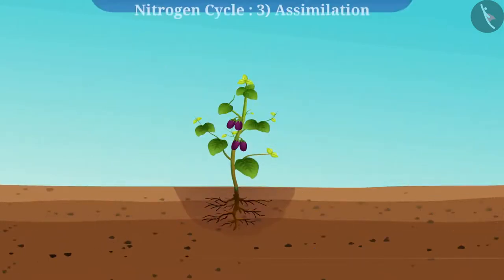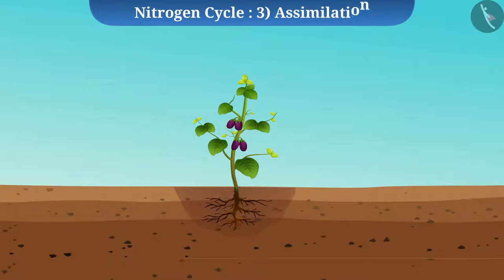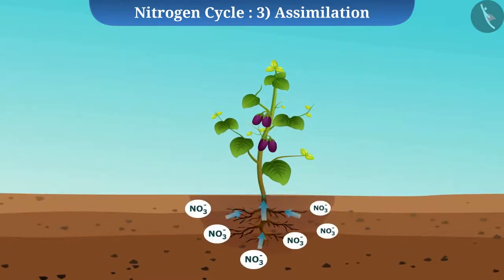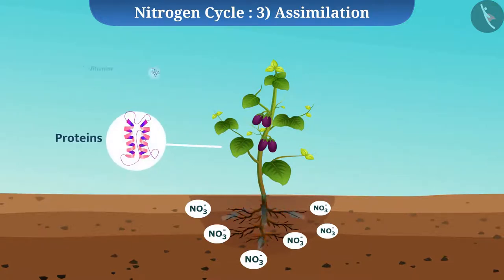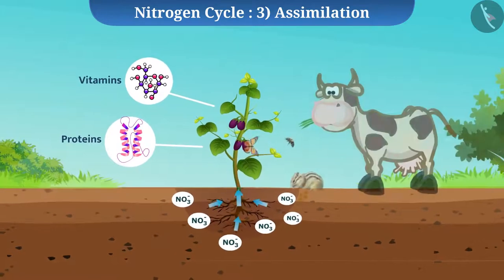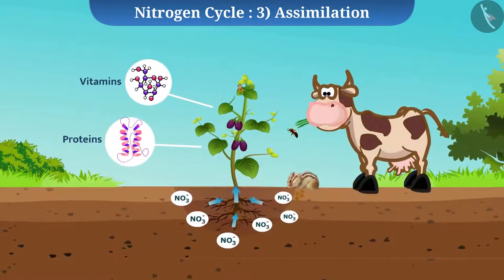The next stage is assimilation. Plants absorb the usable form of nitrogen from the soil through their roots and use it for the formation of proteins and other essential compounds. Through the food web, nitrogen is transported to other animals.